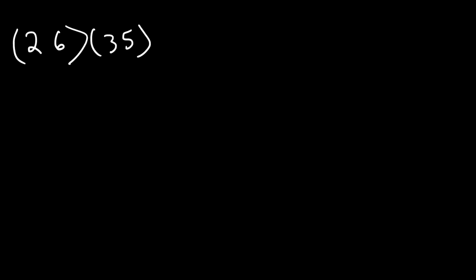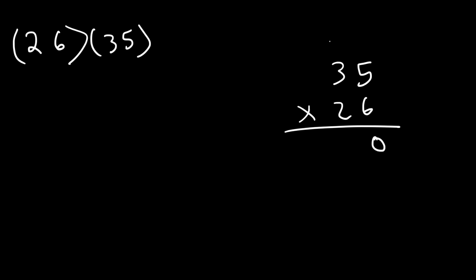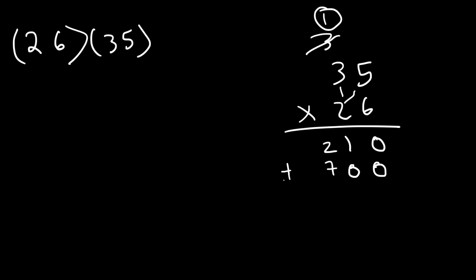Try this example: what's 26 multiplied by 35? Let's write it the old-fashioned way. 5 times 6 is 30 — write the 0, carry the 3. 3 times 6 is 18, plus 3 is 21. For the next row, write a placeholder 0, then 2 times 5 is 10 — write 0, carry 1. 2 times 3 is 6, plus 1 is 7. Adding the two rows: 0 plus 0 is 0, 1 plus 0 is 1, 2 plus 7 is 9. So 35 times 26 is 910, verified by calculator.